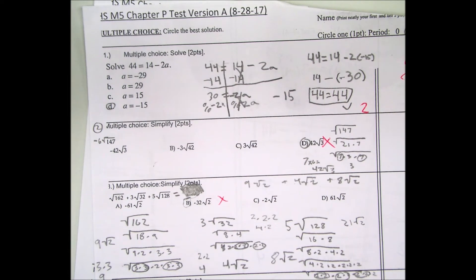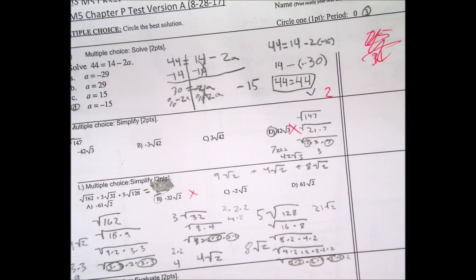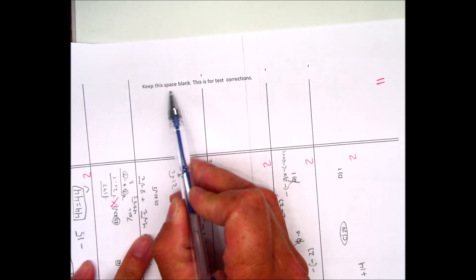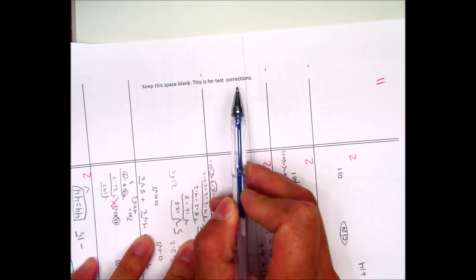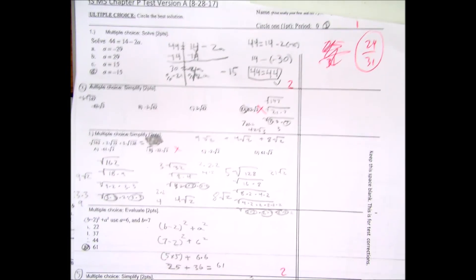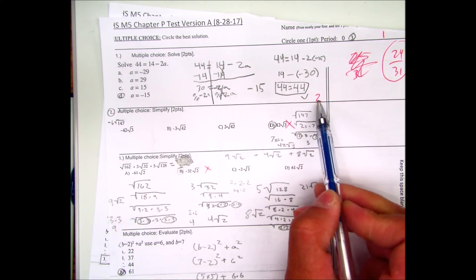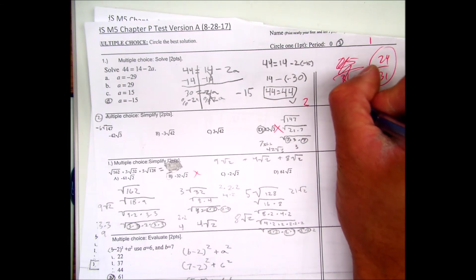Alright, so now that you've gotten your quiz back, you have this space on the side there and it says keep this space blank. This is for quiz or test corrections. So obviously when you see a problem it tells you how many points it's out of and how many you're awarded so you can just write over here correct.